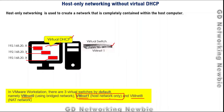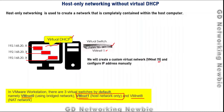VMNET 1 is by default host-only, but in this video we will create a custom virtual network and we can give it any number — for example VMNET 15. We will configure IP addresses manually, meaning we will not be using any virtual DHCP server. We will create a network called VMNET 15 and then manually configure the IP addresses of all those virtual machines.